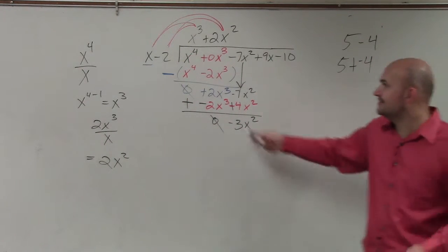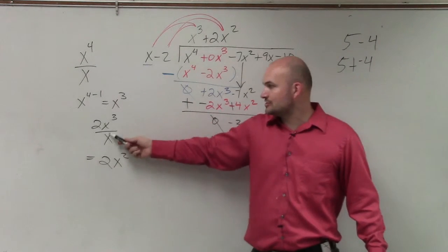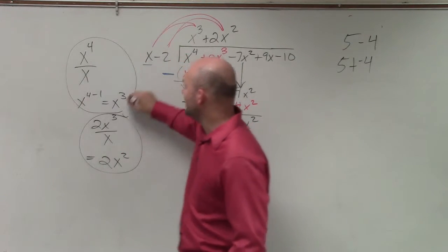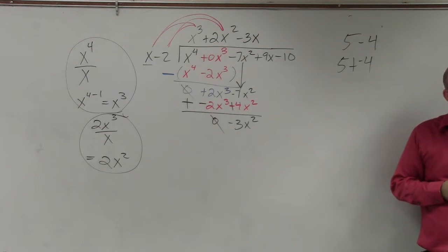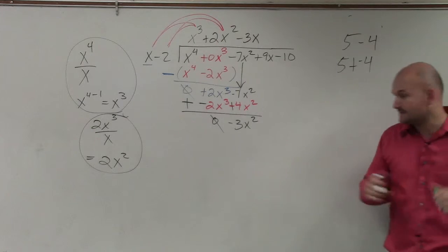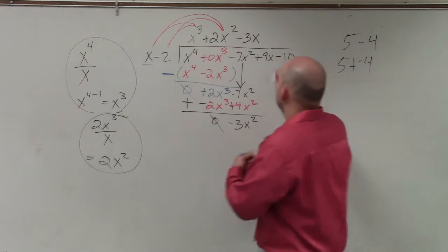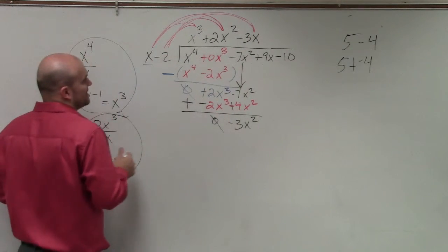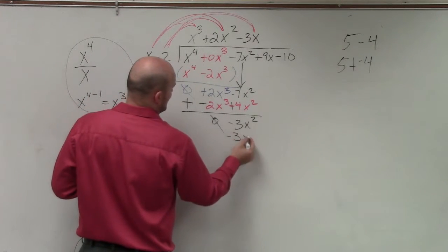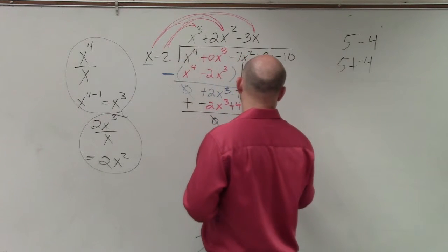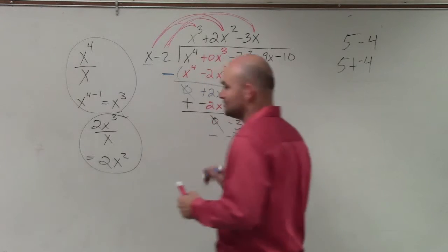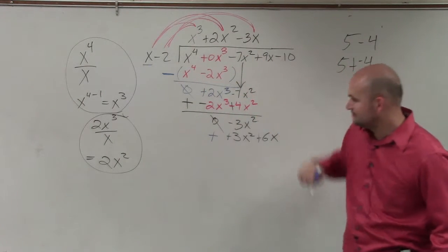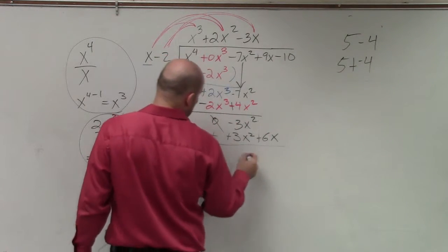We do the same process again. x divides into negative 3x squared, so it goes in negative 3x times. Multiply negative 3x by both terms: negative 3x times x gives negative 3x squared, and negative 3x times negative 2 gives negative 6x. Rather than subtracting the rows, I add and negate — making the opposite sign. Negative 3x squared plus 3x squared is 0x squared.